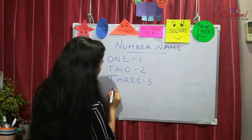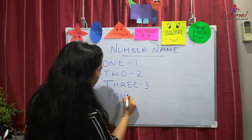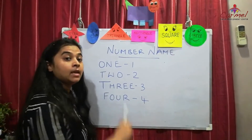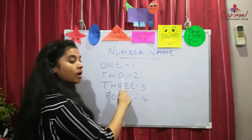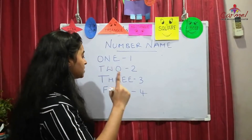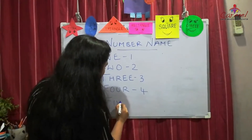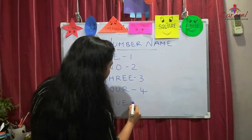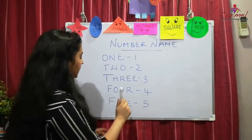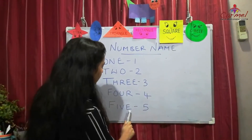Very good. Now let's write number 4. F, O, U, R — four. Repeat after me: F, O, U, R — four. Very good. Now let's write number 5. F, I, V, E — five. Repeat after me: F, I, V, E — five. Say it again: F, I, V, E — five.